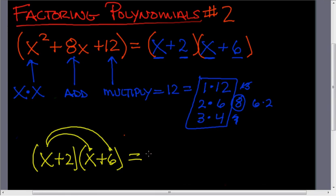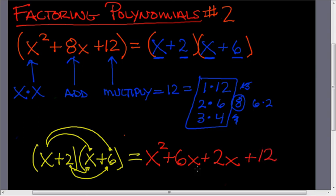Distribute the first one. x times x is x squared. x times 6 is 6x. This 2 here will multiply by the x and also the 6. 2 times x is 2x. 2 times 6 is 12.